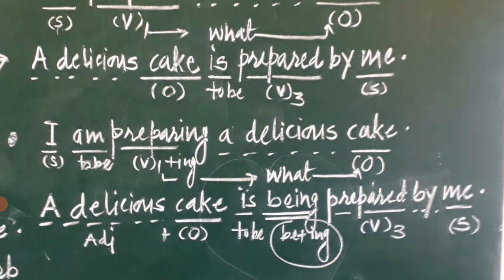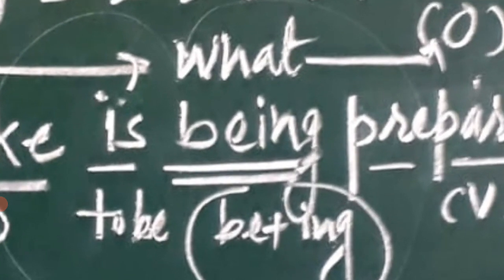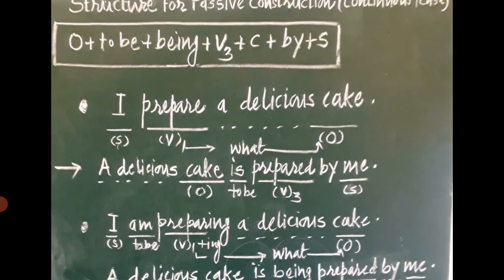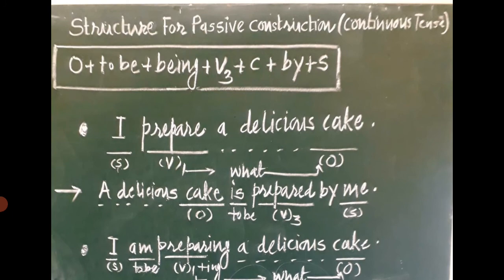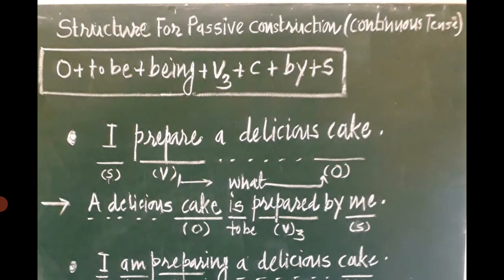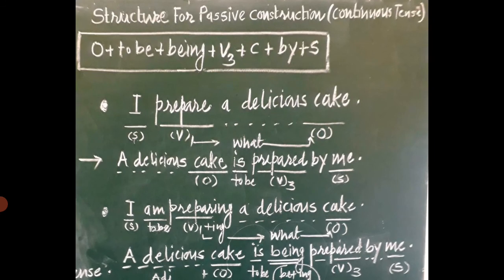The only word which is additional in the continuous tense passive is being. Why do we keep being there? Just to make it clear that the given sentence is in continuous tense form. I hope you have understood it well, and your idea about the structure of passive construction of continuous tense is quite clear.